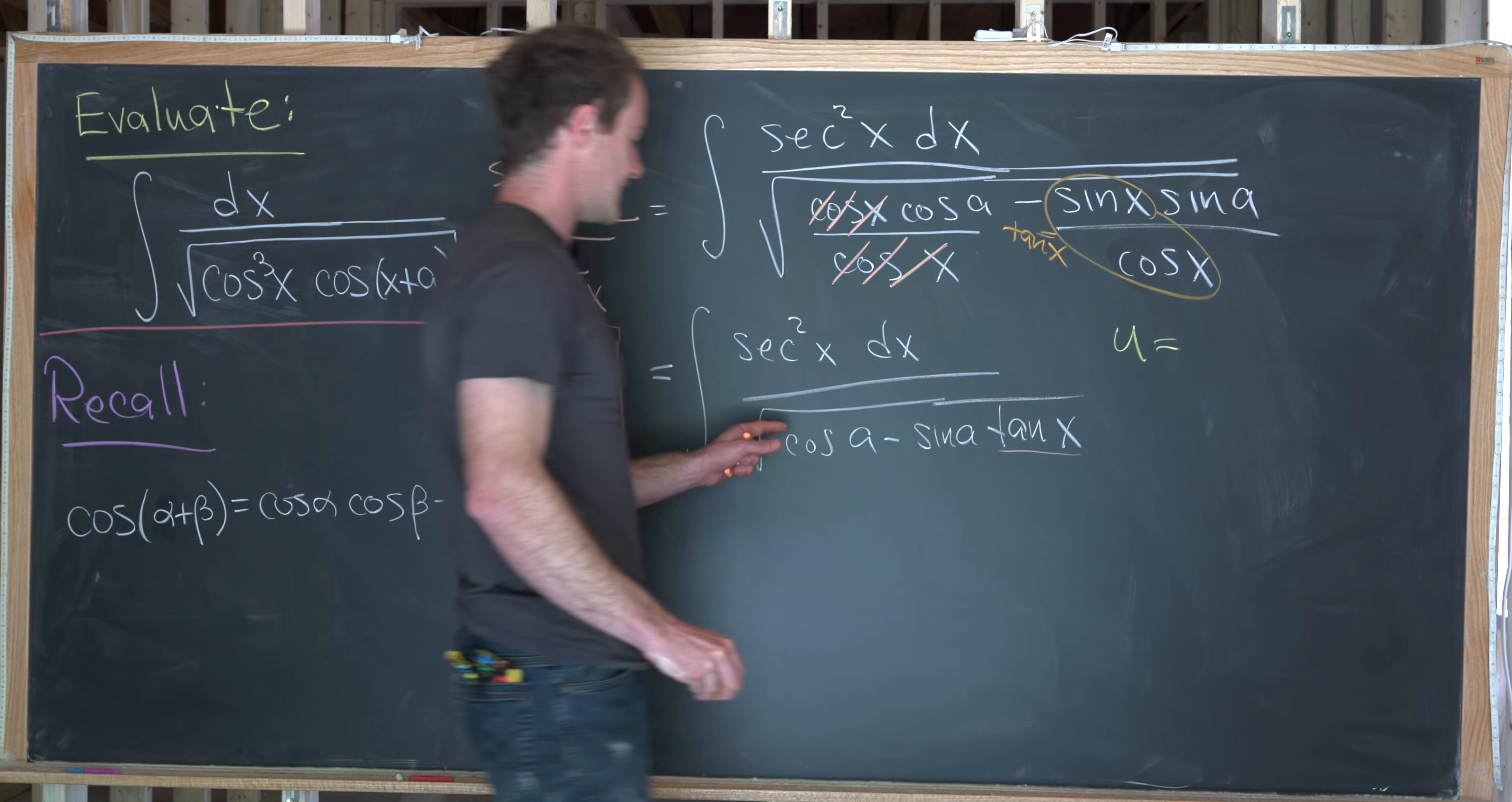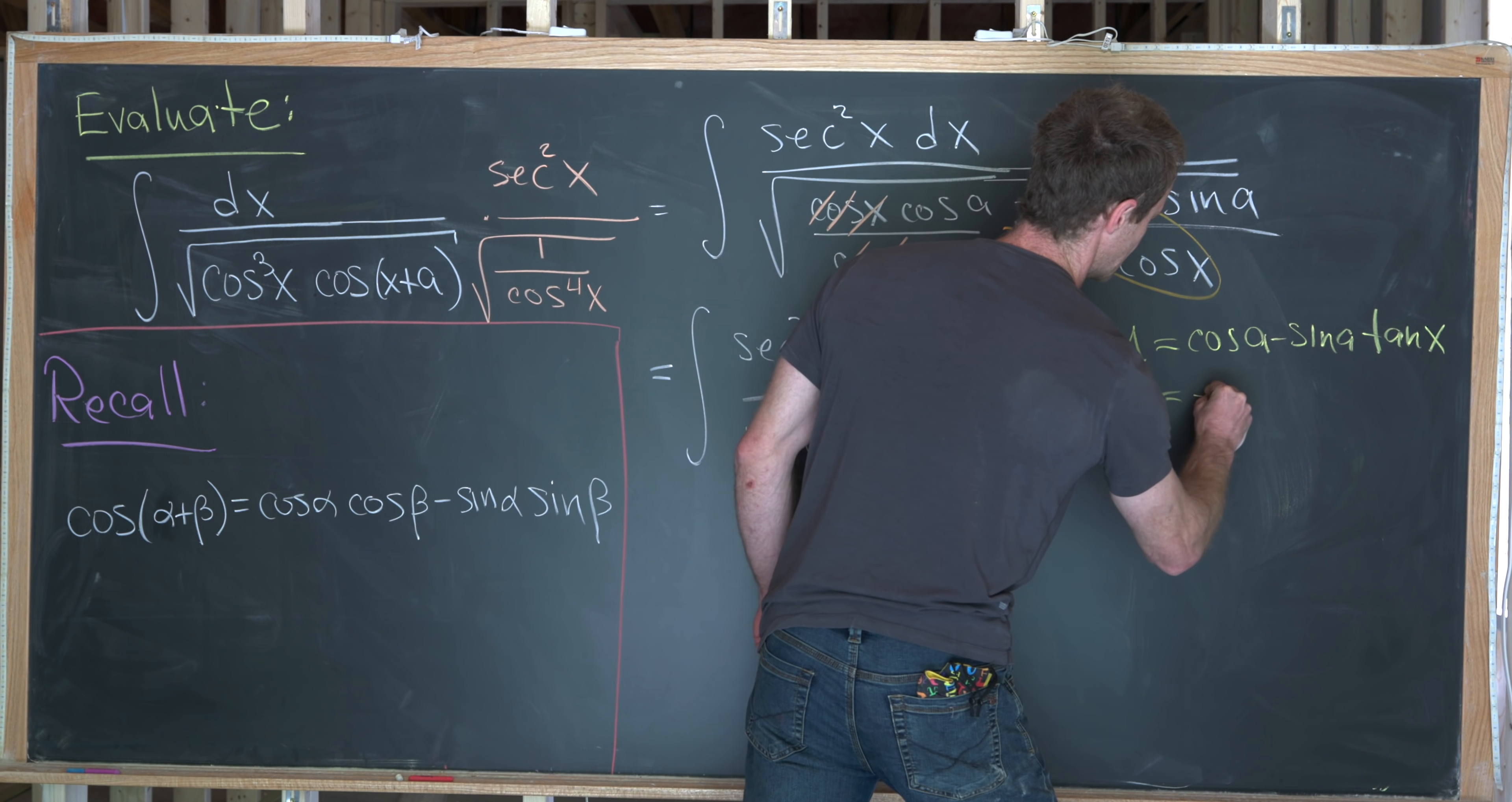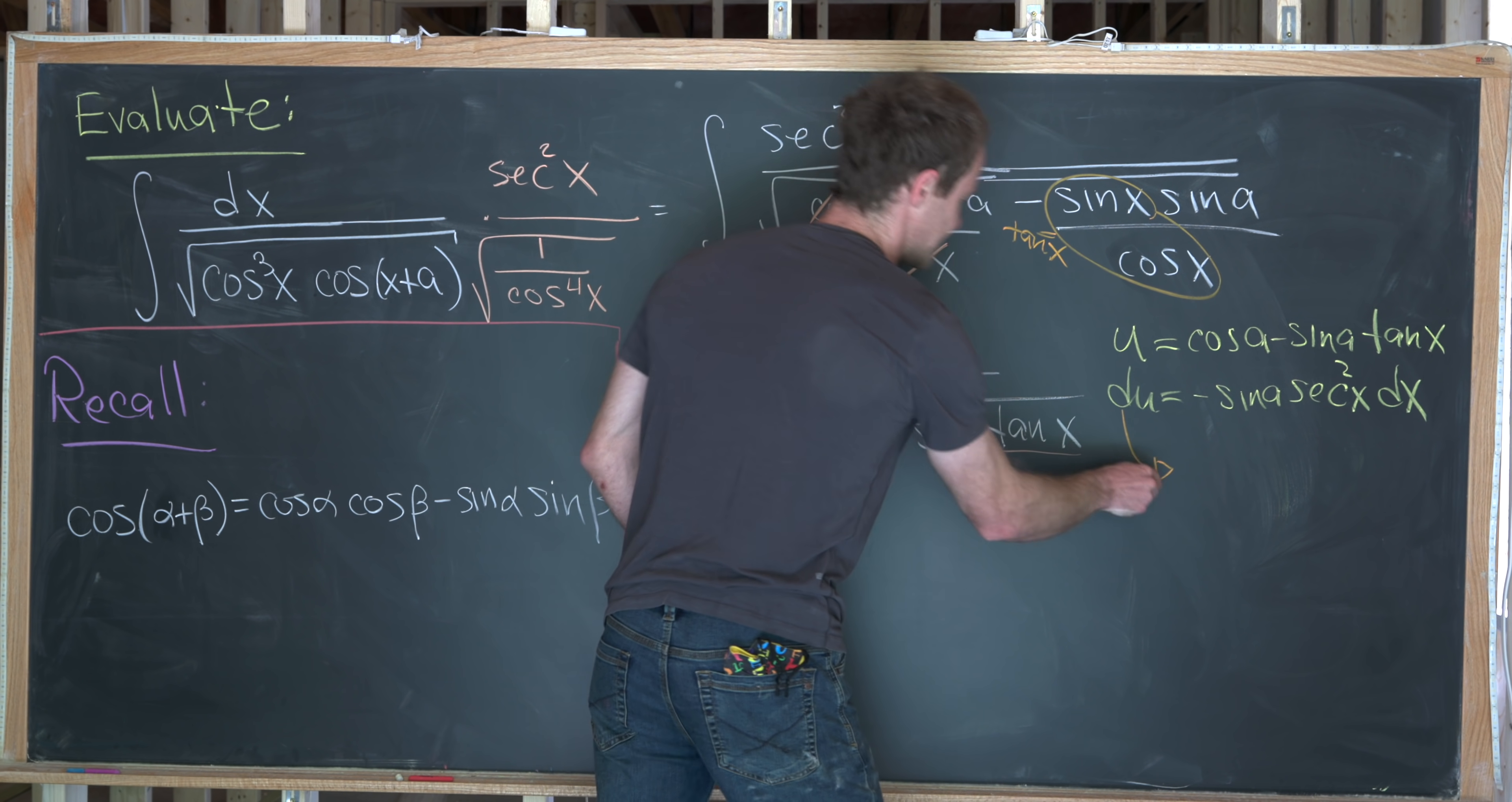So let's let u be the interior of this square root. That'll be cos a minus sine a tan x. That's going to make du equal to minus sine a secant squared x dx. The derivative of cosine of a is zero because that's a constant. Then we can use the constant multiple rule for the other part. But now we can rearrange this a little bit,